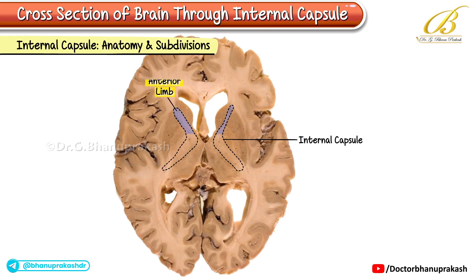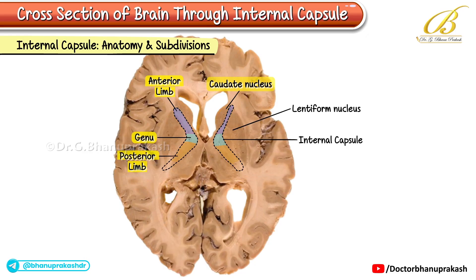1. Anterior limb: This portion lies between the head of the caudate nucleus and the lentiform nucleus. 2. Genu: The genu is a bend between the anterior and posterior limbs of the internal capsule. 3. Posterior limb: It is situated between the thalamus and the lentiform nucleus.